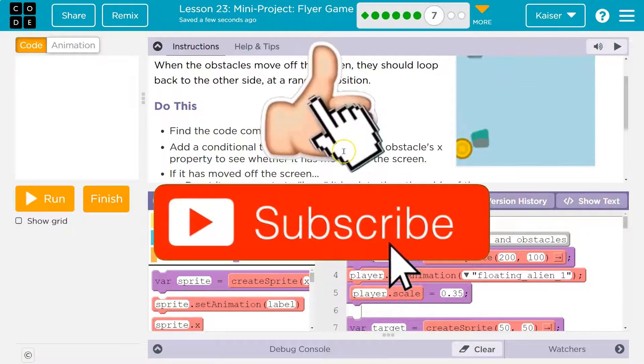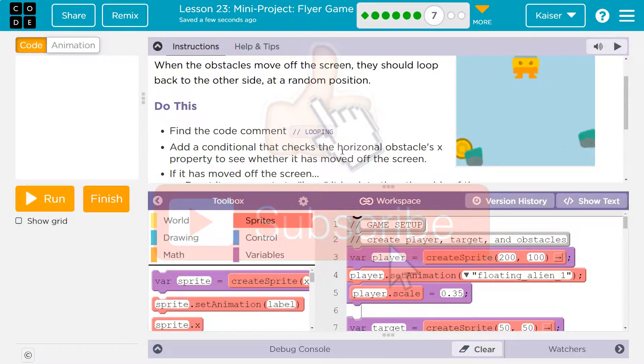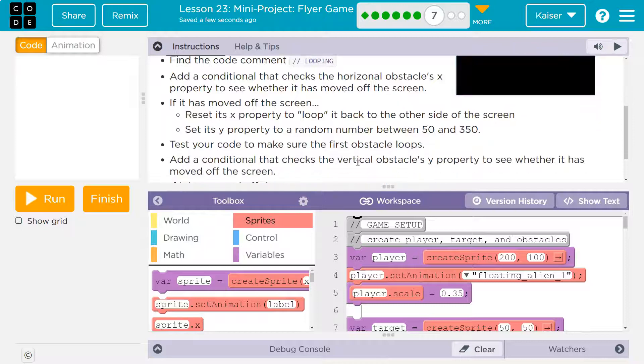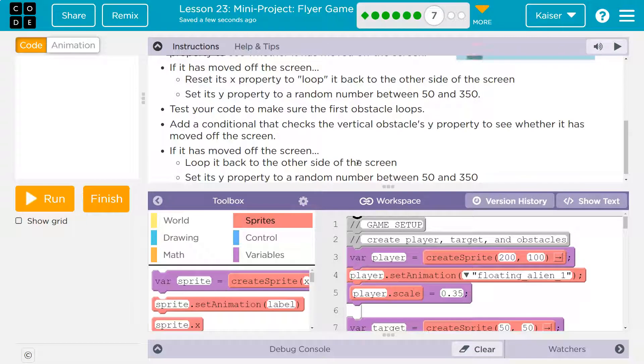When the obstacles move off the screen, they should loop back to the other side. Do this: find the code for looping, add a conditional that checks the horizontal obstacle's x property. If it's off the screen, reset its property to loop back to the other side of the screen. Set the y property to a random number.